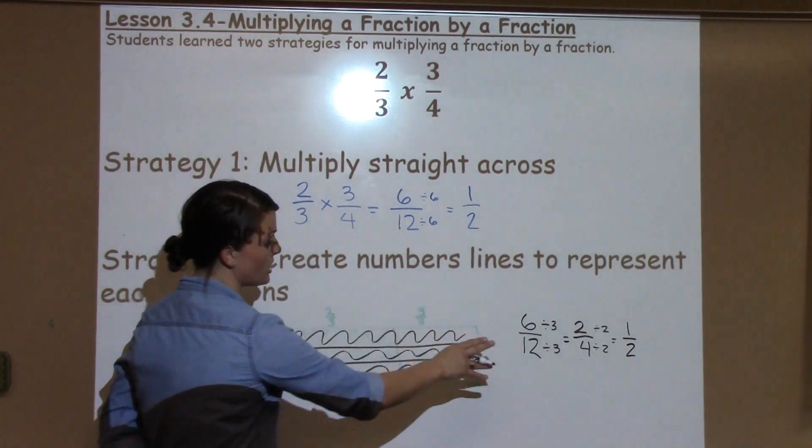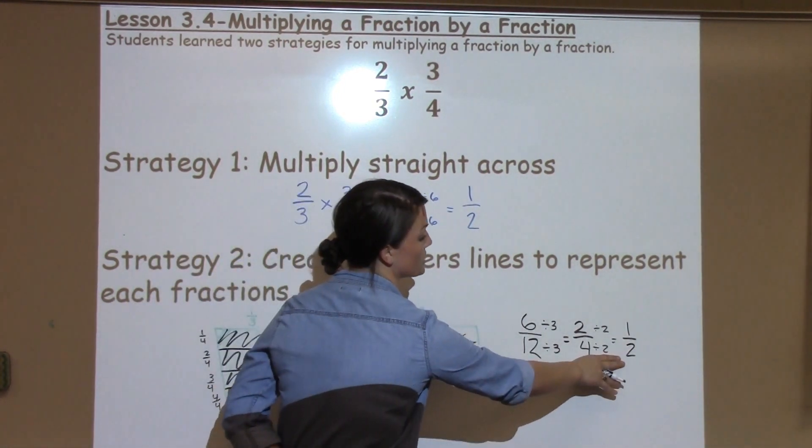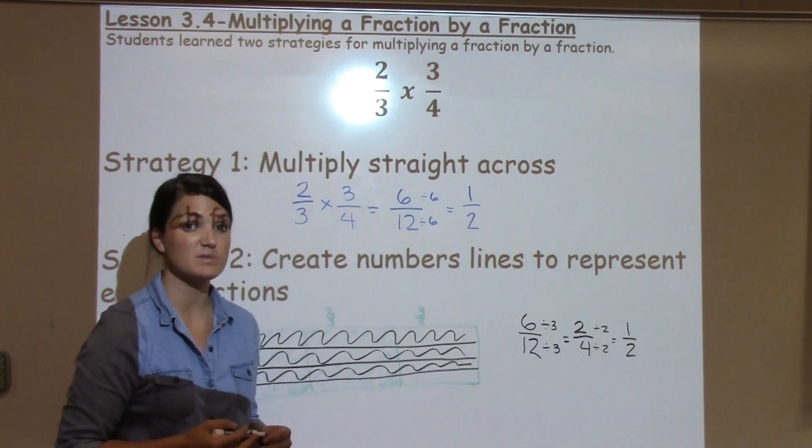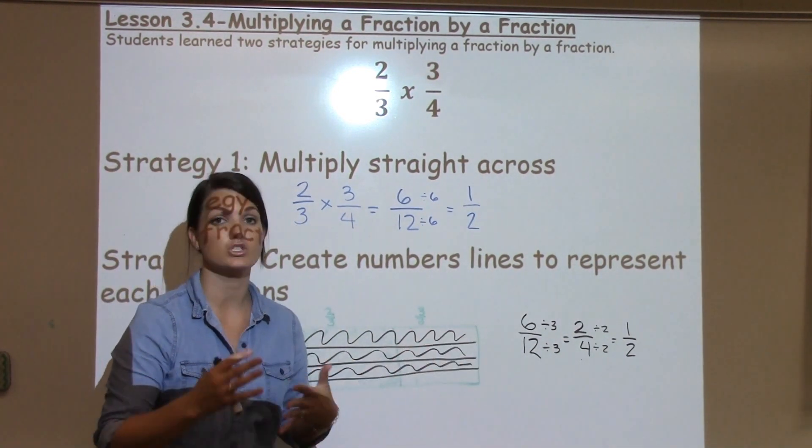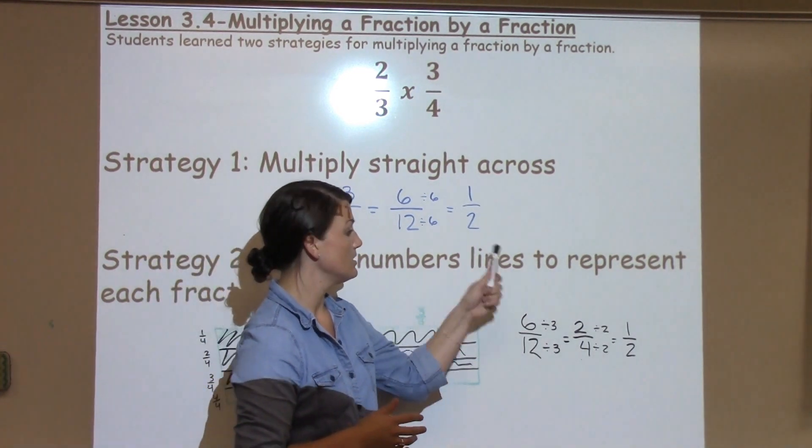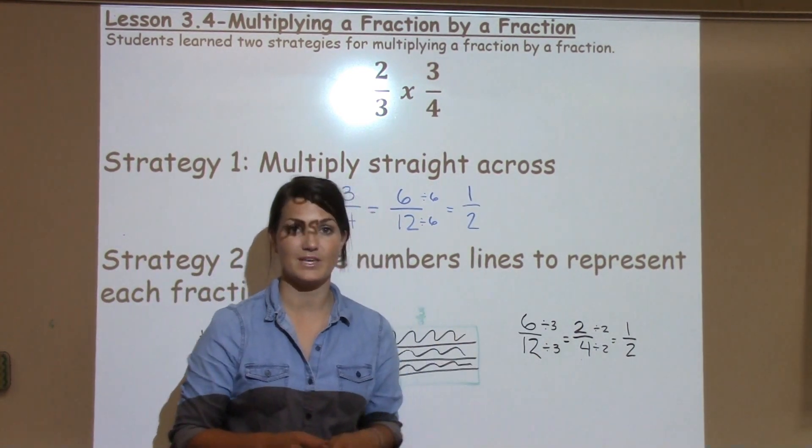Now, your student could show their work as 6 twelfths, 2 fourths, or 1 half, unless their teacher is specifically asking for simplest form on their fractions. All of those fractions are equivalent. But when we're looking for simplest form, we want to get down as low as we can go.